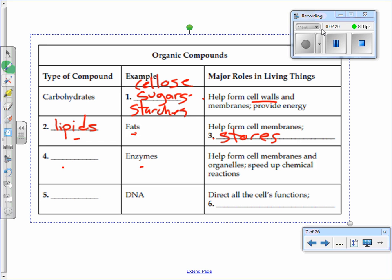Butter, oil, all those yummy things, but they have a lot of energy in them. Next, a type of compound, enzyme. What's going to go here? This one's a little tricky. Yes, proteins. Enzymes help form cell membranes, organelles, speed up chemical reactions. Everybody agree?